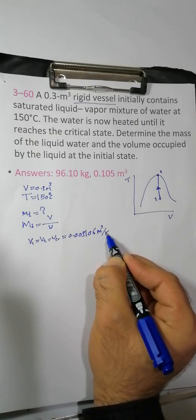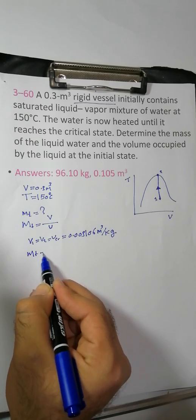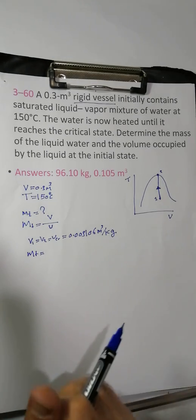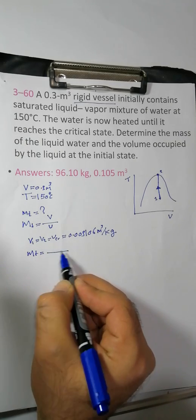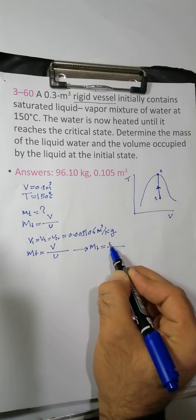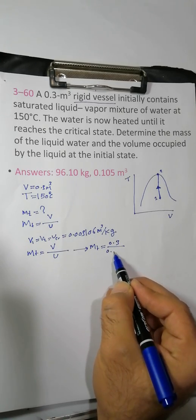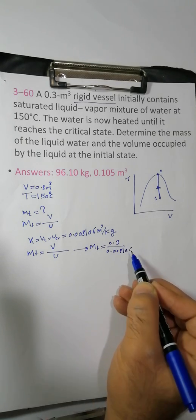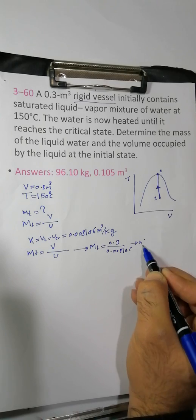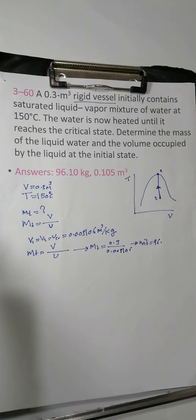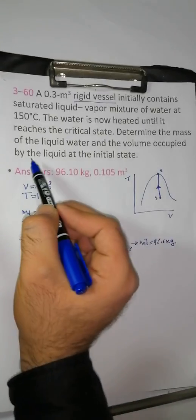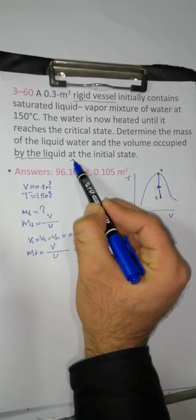The specific volume is approximately 0.001 m³/kg. To find the critical state, refer to the table. We want the total volume and the specific volume at the initial state, point C.